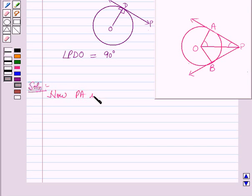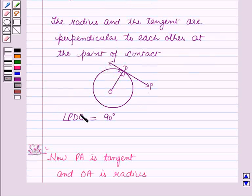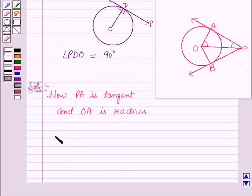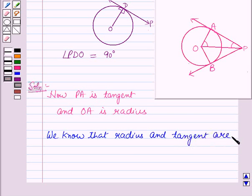Now PA is the tangent and this is a circle with center O, so OA is the radius. Using the result from the key idea, we know that the radius and tangent are perpendicular to each other.